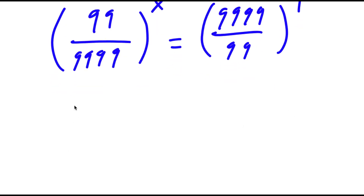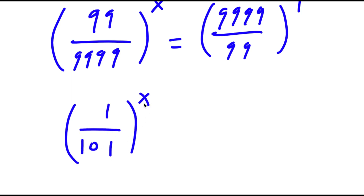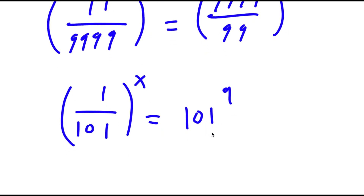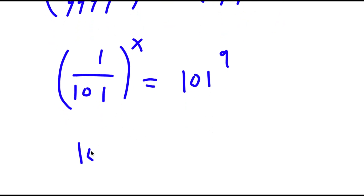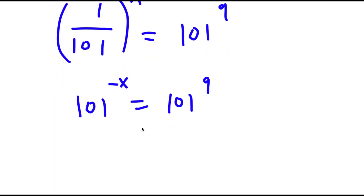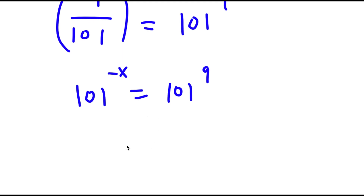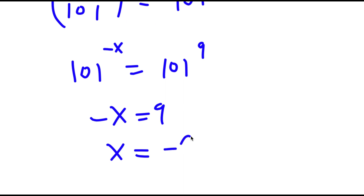This simplifies to 1 over 101 to the power of x is equal to 101 to the power of 9. This is the same thing as 101 to the power of negative x equals 101 to the power of 9, meaning negative x equals 9, and x equals negative 9.